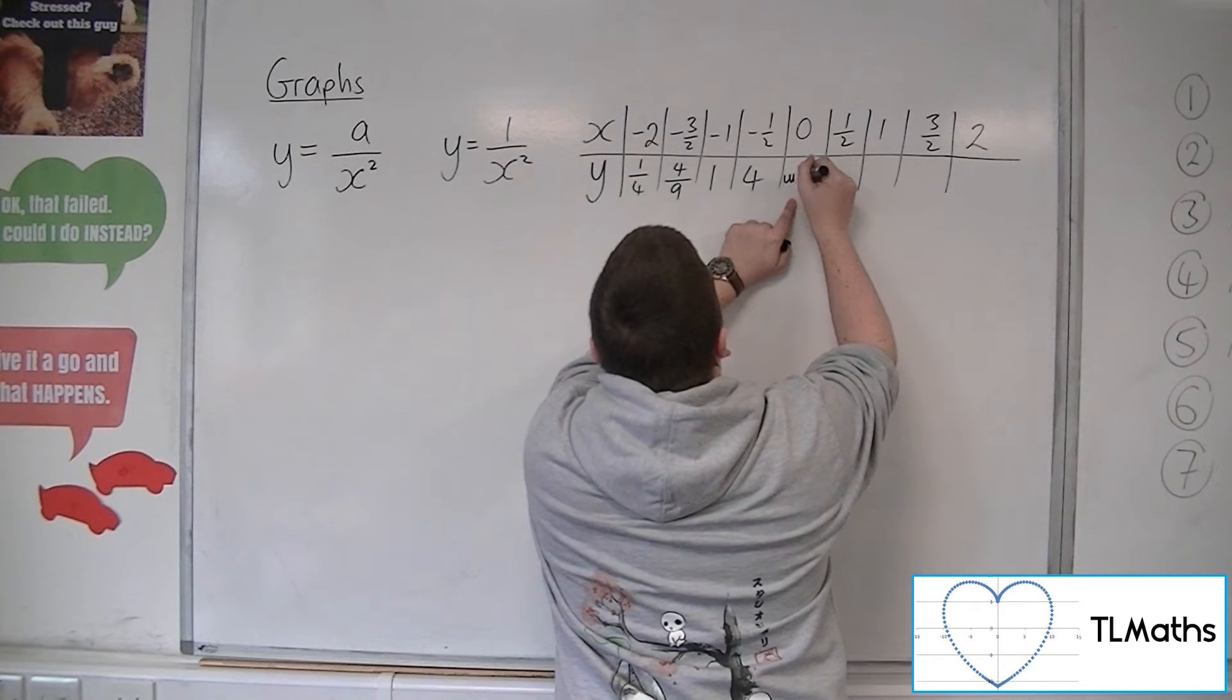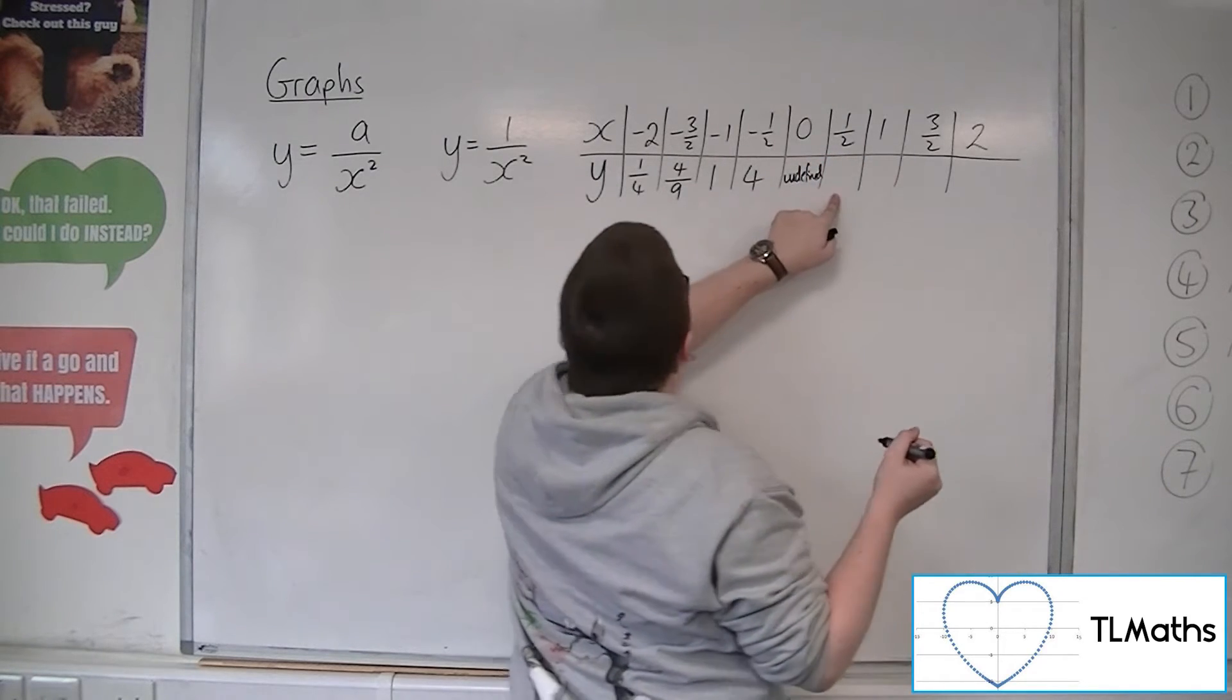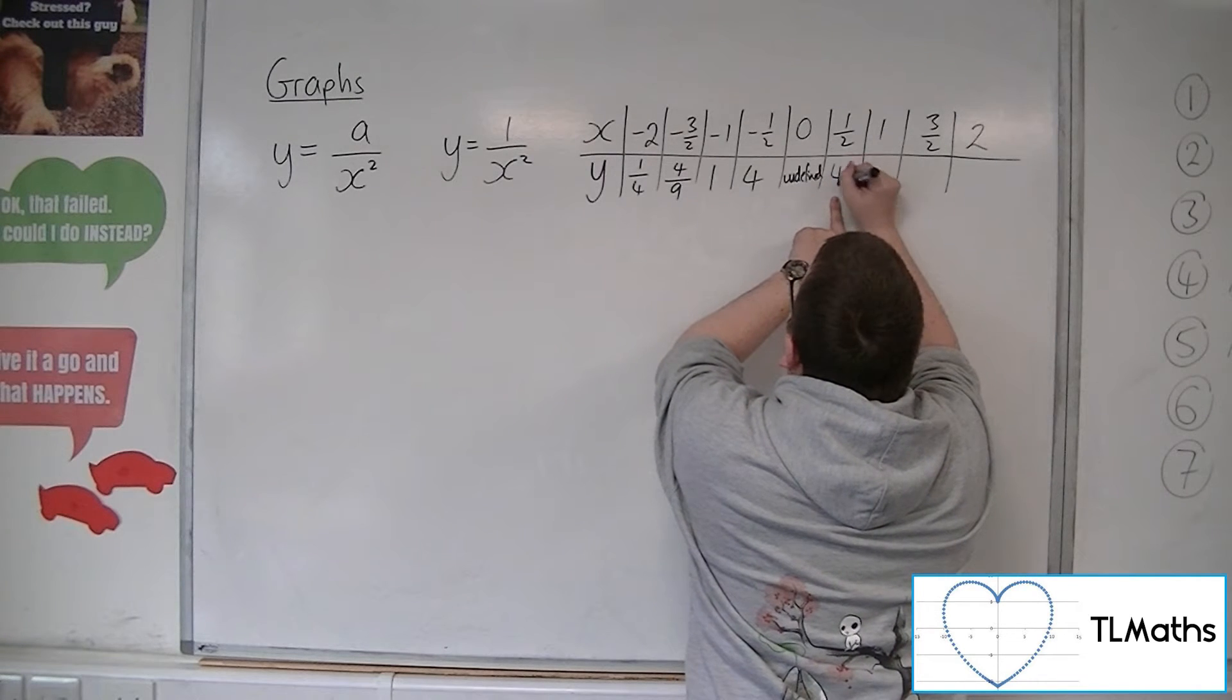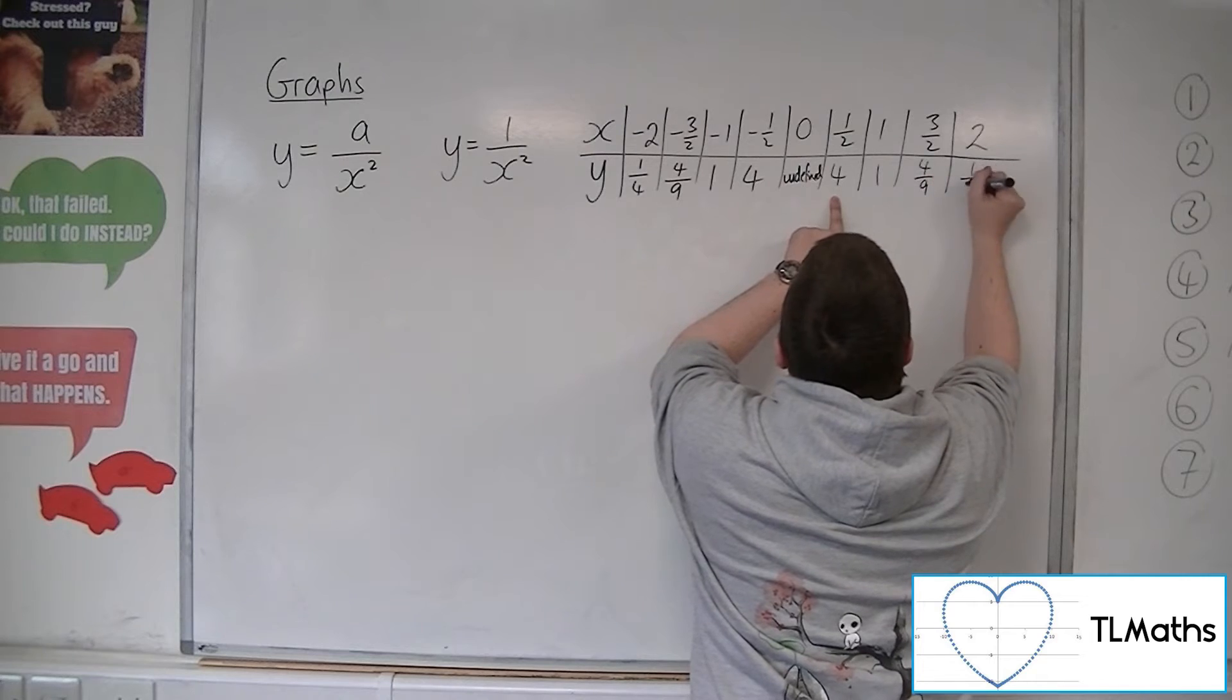At x = 0, the graph is undefined because we can't divide by zero. Then we have 1/(1/2)² = 4, then 1, then 4/9, and then 1/4.